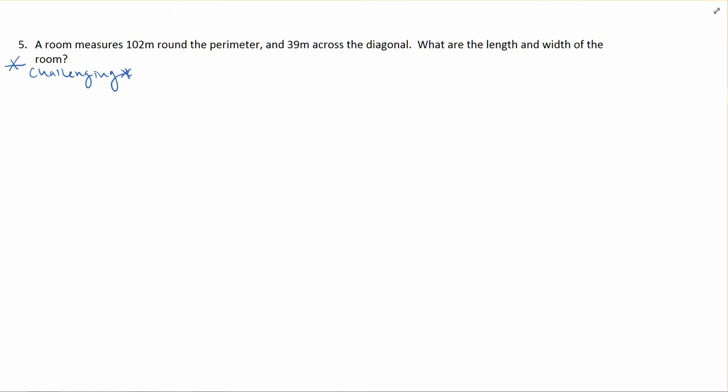So this is the last one in the context section for quadratics and it is a really challenging problem. A room measures 102 meters around the perimeter. I'm going to assume this is a rectangle for a room or maybe even a square. So here's my room and the perimeter is going to equal 102 meters.